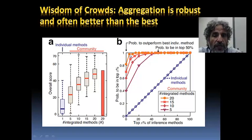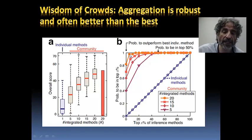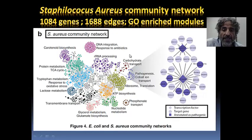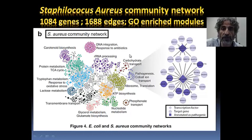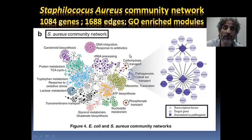The different ways of thinking about how to infer networks are being aggregated into one final prediction — just as Galton was aggregating the weight guesses of all 800 participants at that county fair. To summarize that paper: we created a community network of Staphylococcus aureus, the first time a network of Staph aureus was actually proposed. This is our prediction that makes a scientific claim — a claim is scientific when it can be refuted — and this network can be refuted by measuring enough of its edges.